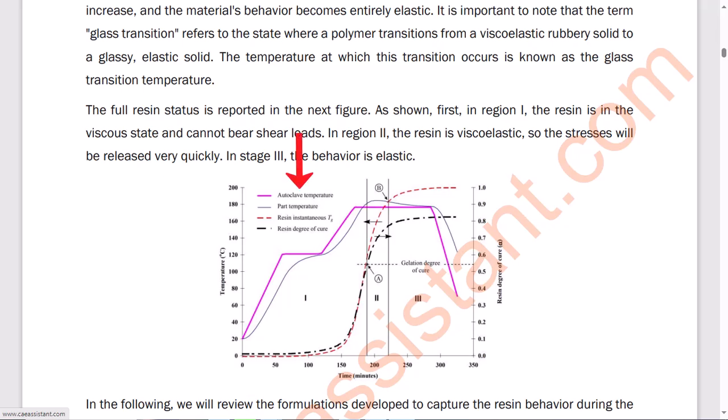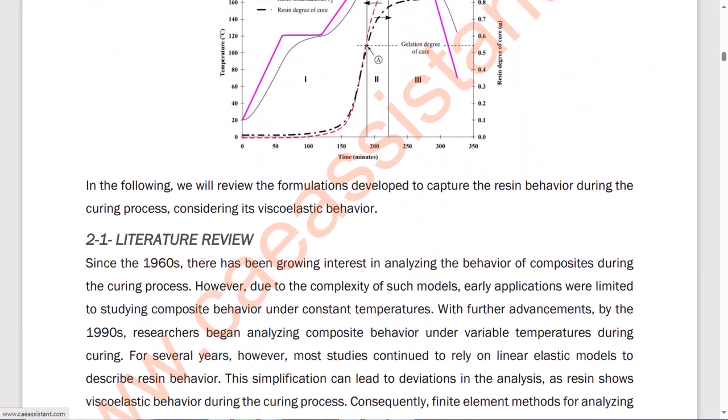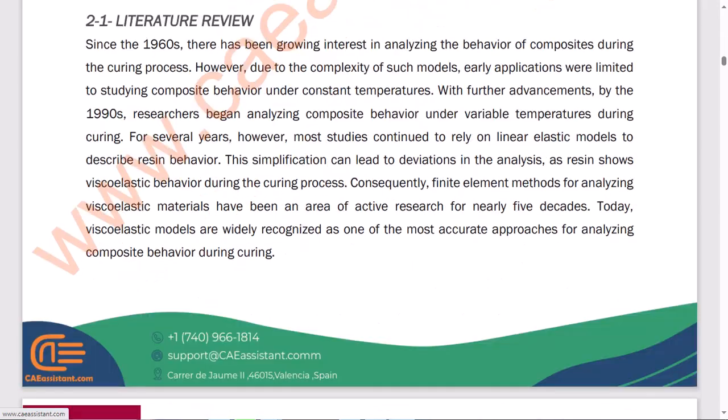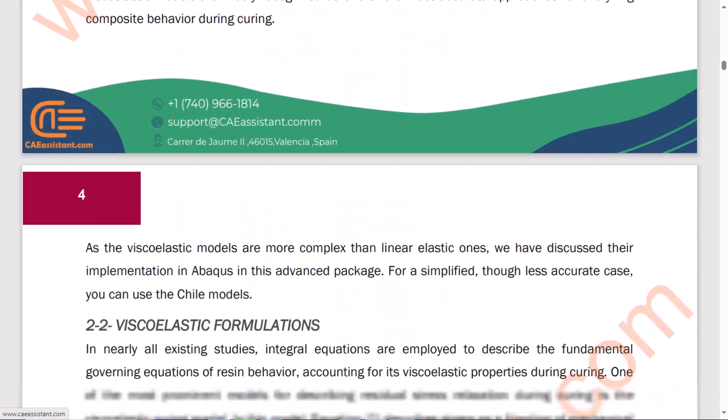As shown, first in Region 1, the resin is in the viscous state and cannot bear shear loads. In Region 2, the resin is viscoelastic, so the stresses will be released very quickly. In Stage 3, the behavior is elastic. In the following, we will review the formulations developed to capture the resin behavior during the curing process considering its viscoelastic behavior.